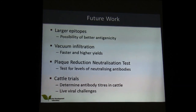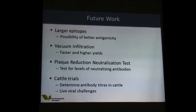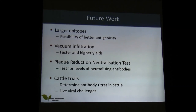For future work, we are planning on working on a larger epitope, currently one which is 140 amino acids, and we should be testing that very soon. We are also planning to move from injecting each plant individually to using vacuum infiltration, which is faster and more efficient. We will also need to carry out a plaque vaccine-neutralization assay to find out the level of neutralizing antibodies we produce using our vaccine, as well as progressing to cattle trials.